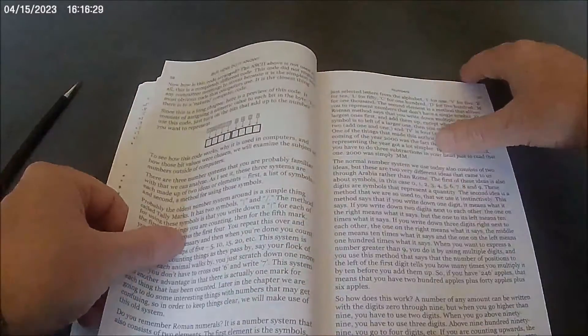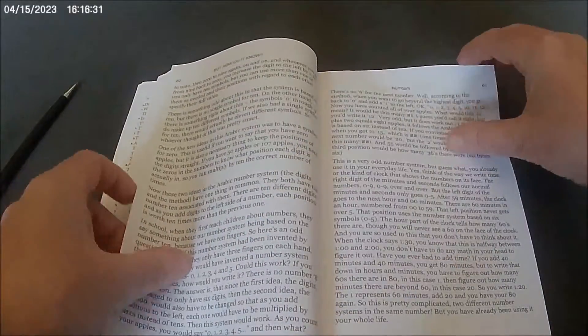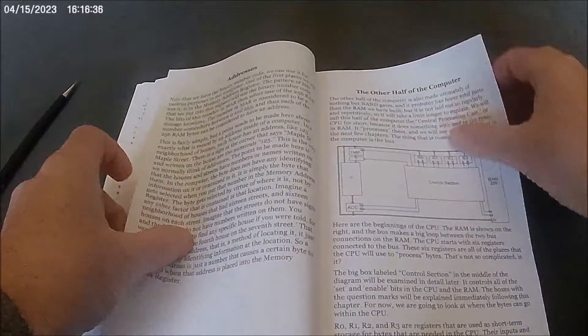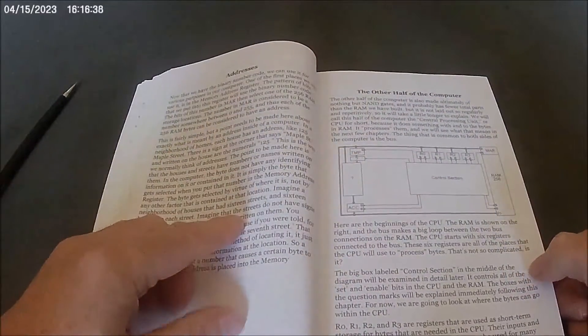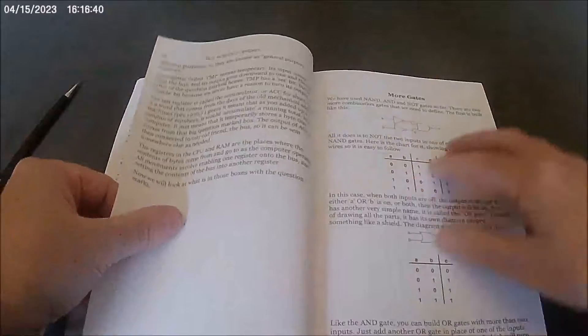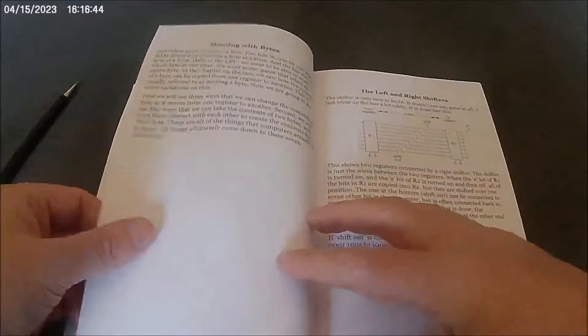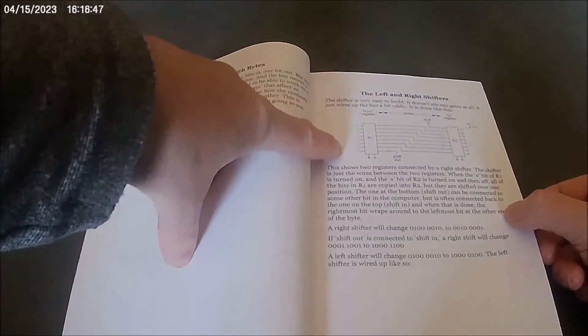And a bit about number systems, I'll quickly flick through this here. And the basic structure of the computer, of the CPU. A little bit more about gates here and different types of structures, for example left and right shifters.